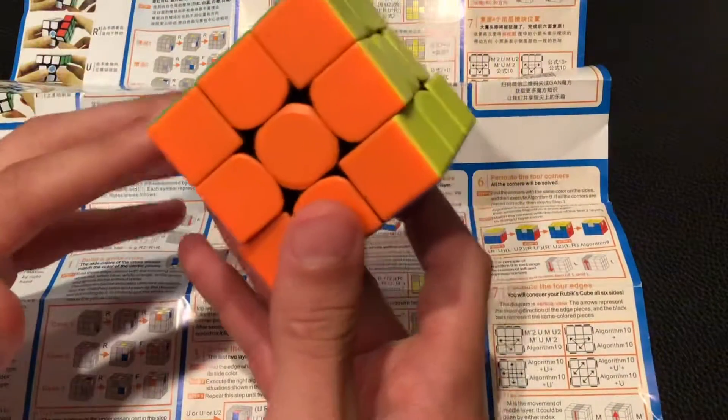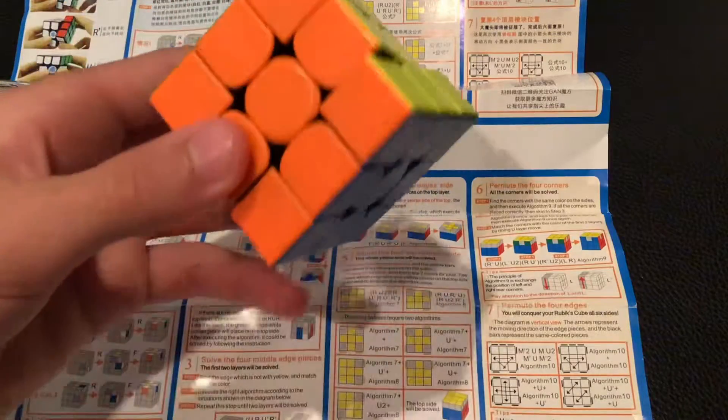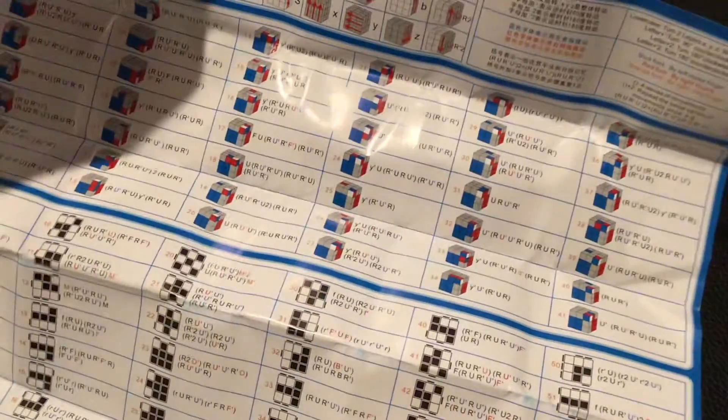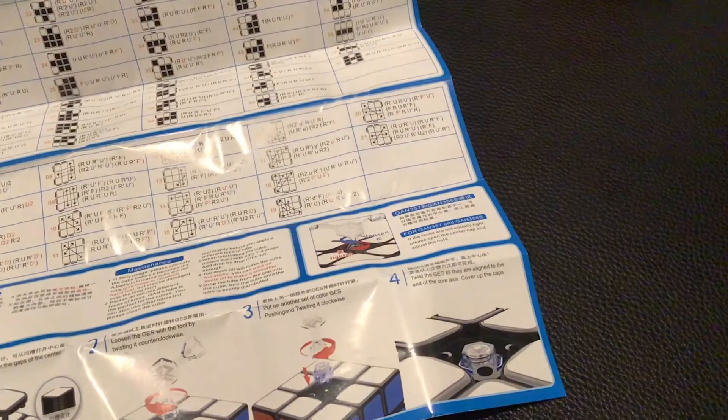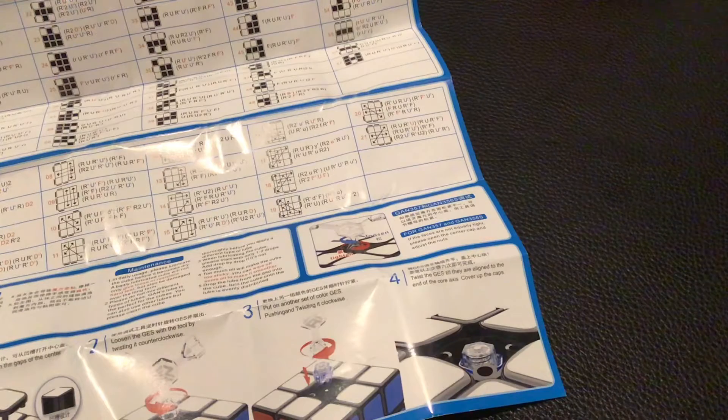So I've been looking over the rest of the tutorial, and on the back, it looks like it has all of the F2L cases and algorithms, and it has all the OLL and PLL cases and algorithms, which is nice if you want to use that to train for those algorithms also.